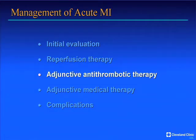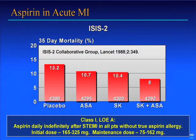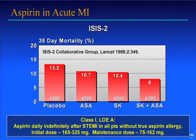Adjunctive antithrombotic therapy has emerged as a very important way of optimizing outcomes of early PCI and preventing reocclusion. Aspirin has been the mainstay since the definitive ISIS-2 trial in 16,000 patients, which randomized patients to aspirin, streptokinase, the combination, or neither. Aspirin reduced the risk of mortality to an extent similar to fibrinolytic therapy, and the combination had an additive effect. Aspirin is a Class 1, Level of Evidence A recommendation — the highest — for all patients with acute MI except those who are allergic.